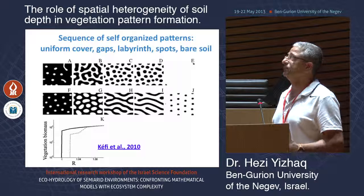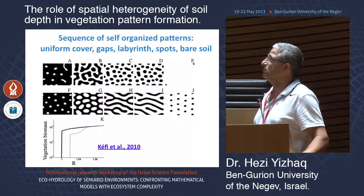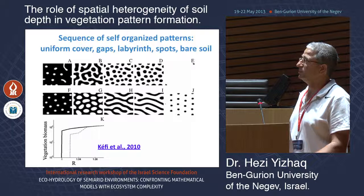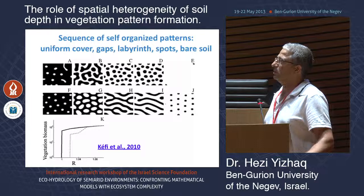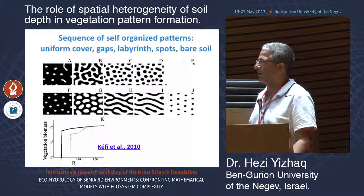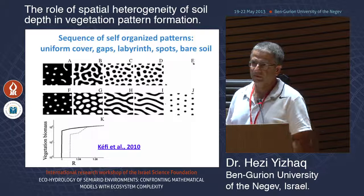The model has the same sequence of universal patterns: bare soil, spots, stripes, labyrinth, and gaps, with an abrupt shift from a vegetated pattern to bare soil. This is a well-published model, but all this analysis is for uniform parameters. Everything changes if we use parameters that vary in time and space.